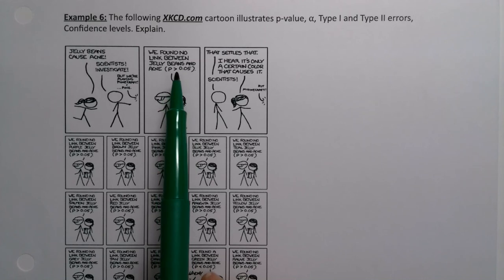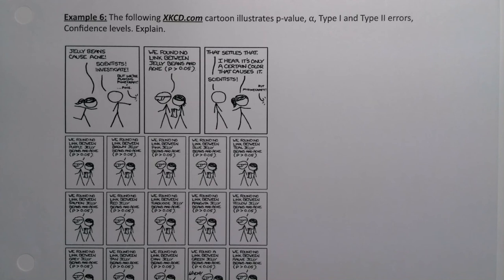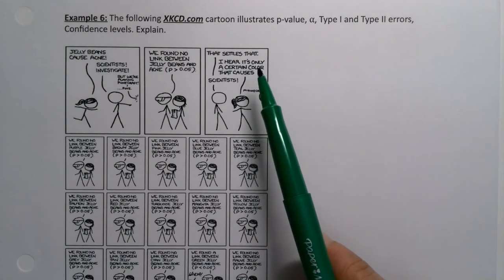That's P value. And then they're saying it's greater than 0.05. So that's implying a level of significance. And he says, well, that settles that.